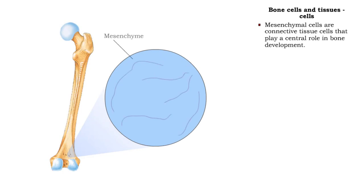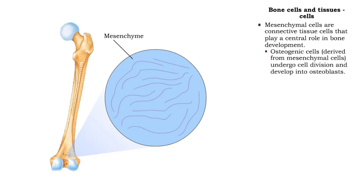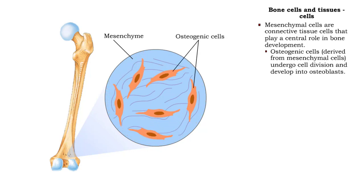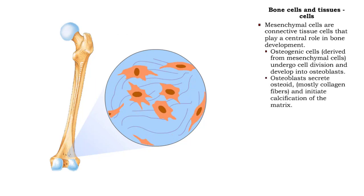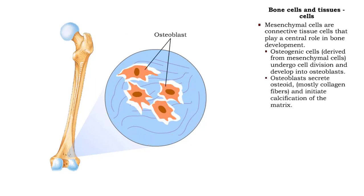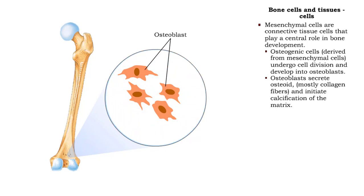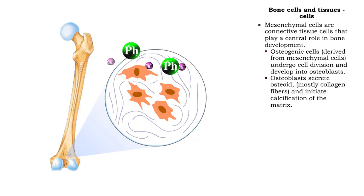Several cell types are associated with bone tissue, each with a different role to play. The process of laying down the bony matrix begins as some mesenchymal cells differentiate into osteogenic cells. These cells mature into bone-building osteoblasts, which lay down osteoid, mostly collagen fibers. They also initiate calcification.